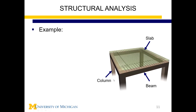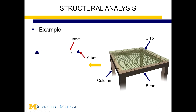To design a beam, we first need to do structural analysis. The first step is to simplify the beam to just one line. Since the beam transfers load to the columns, the columns represent the supports. We have two columns — and thus two supports — at the ends of the beam. The effect of the slab on the beam comes as a distributed load. This configuration is called a simply supported beam: a one-bay beam supported at both ends.